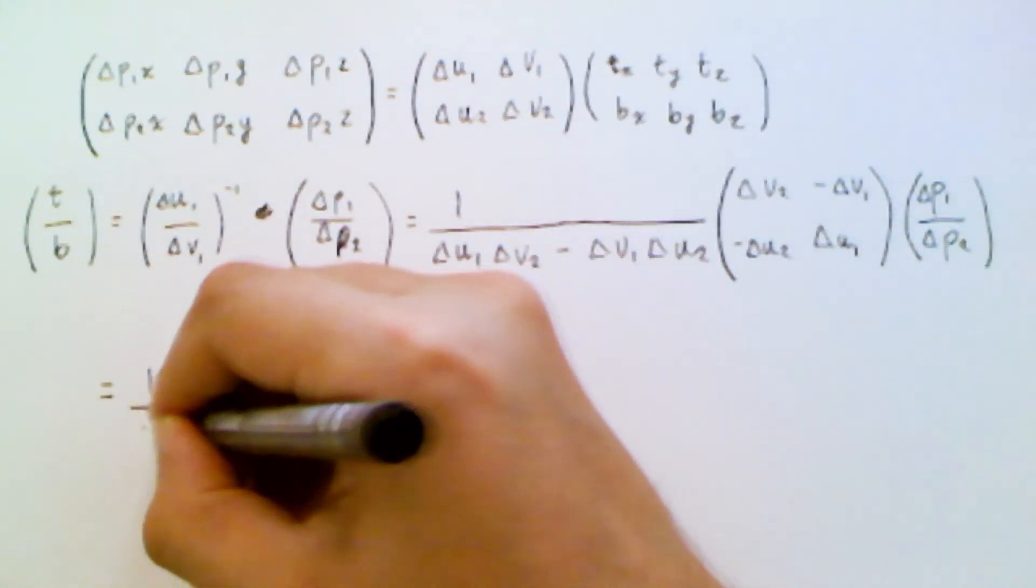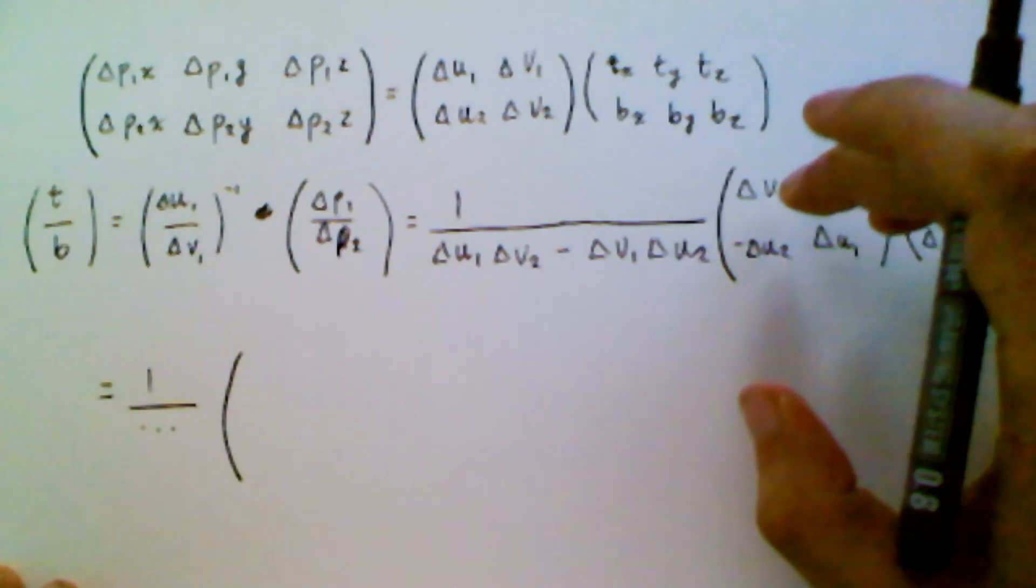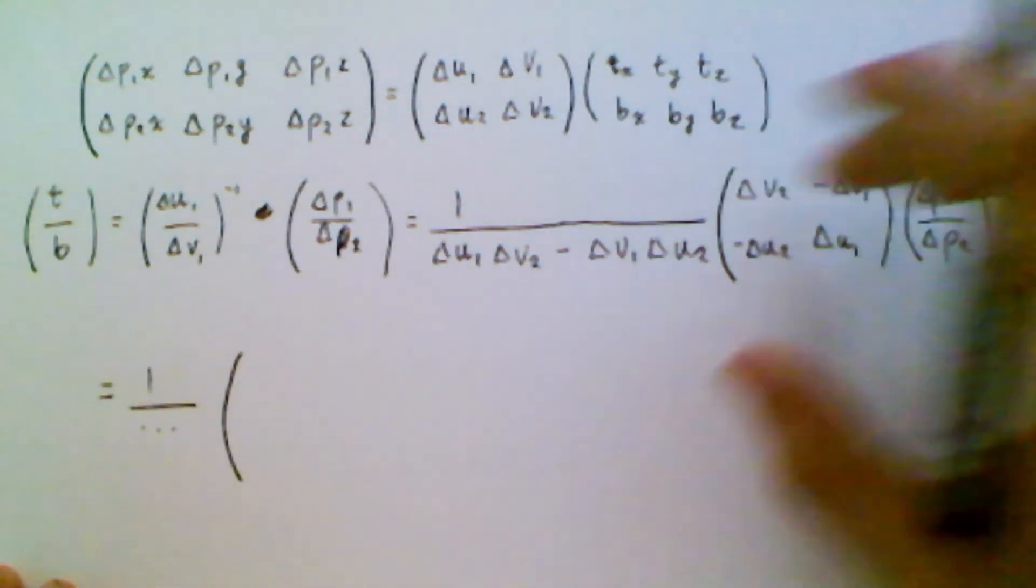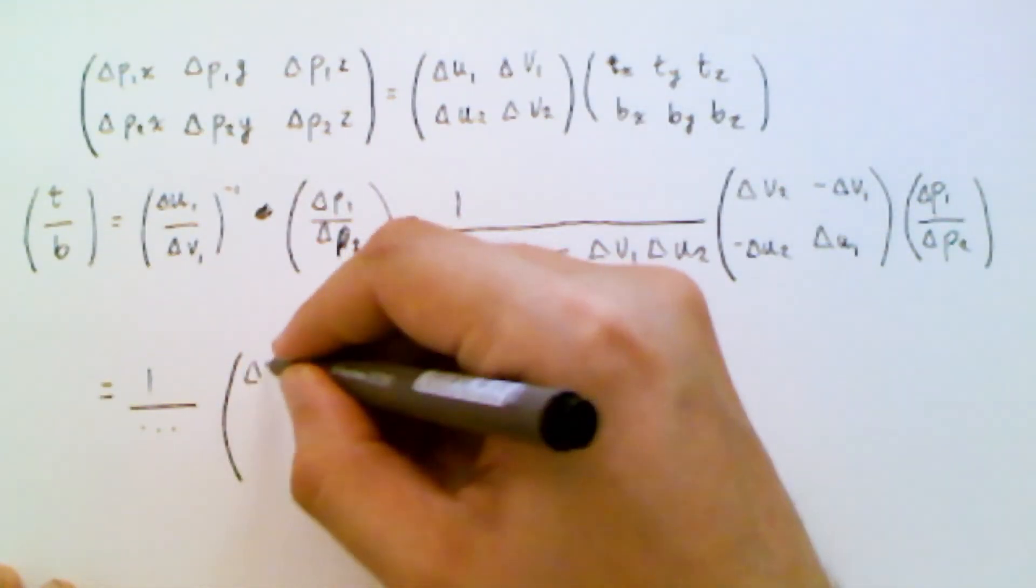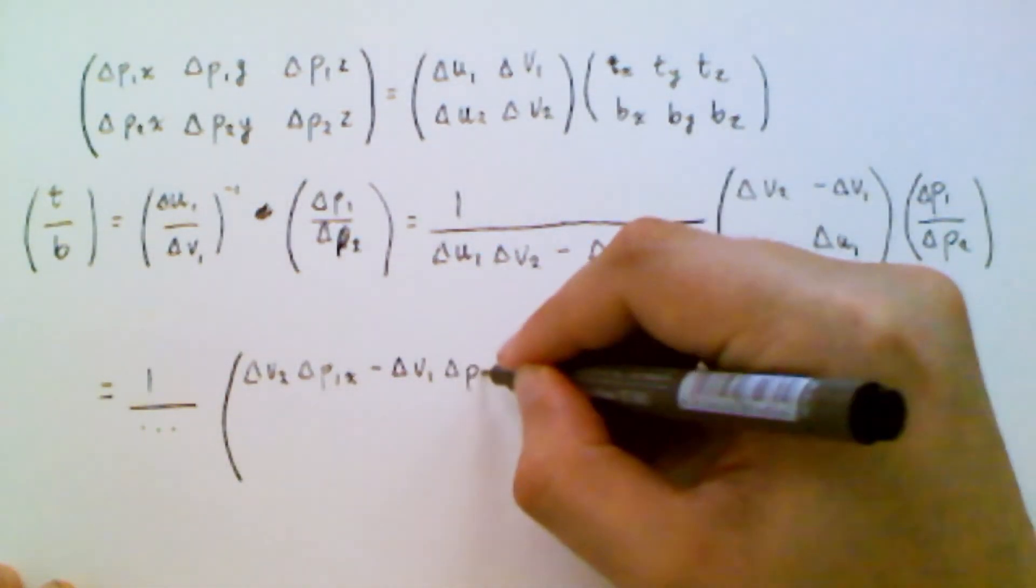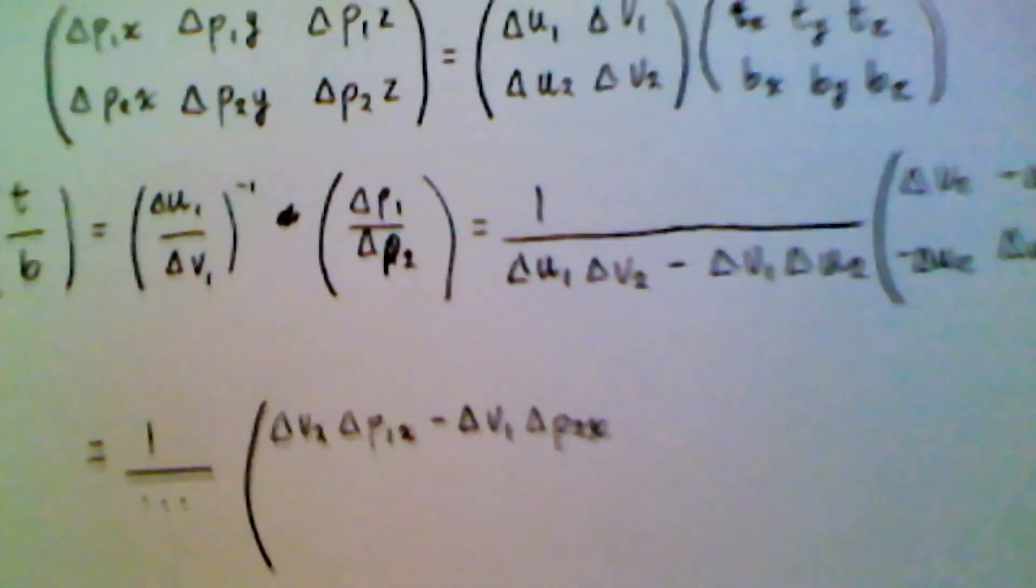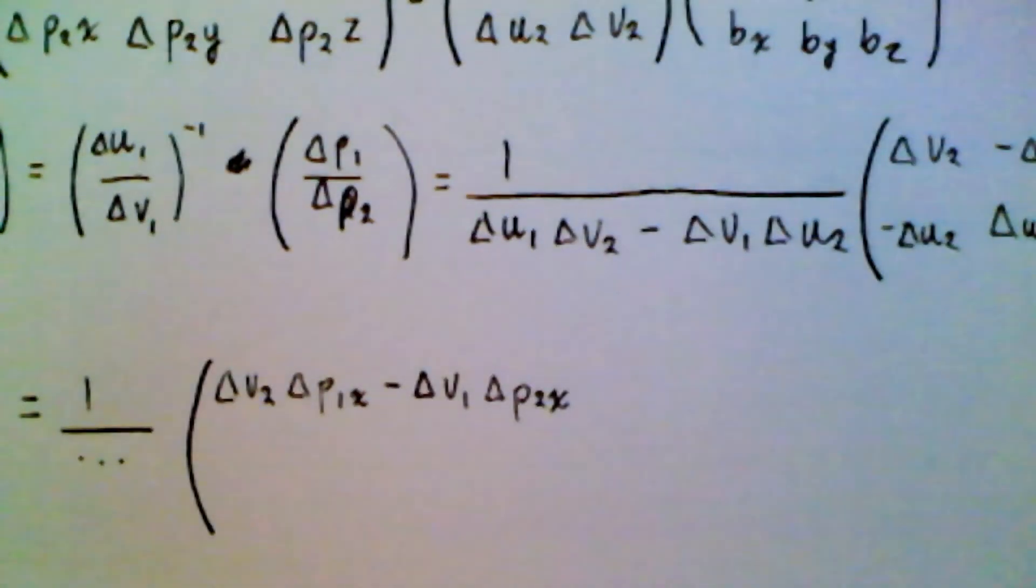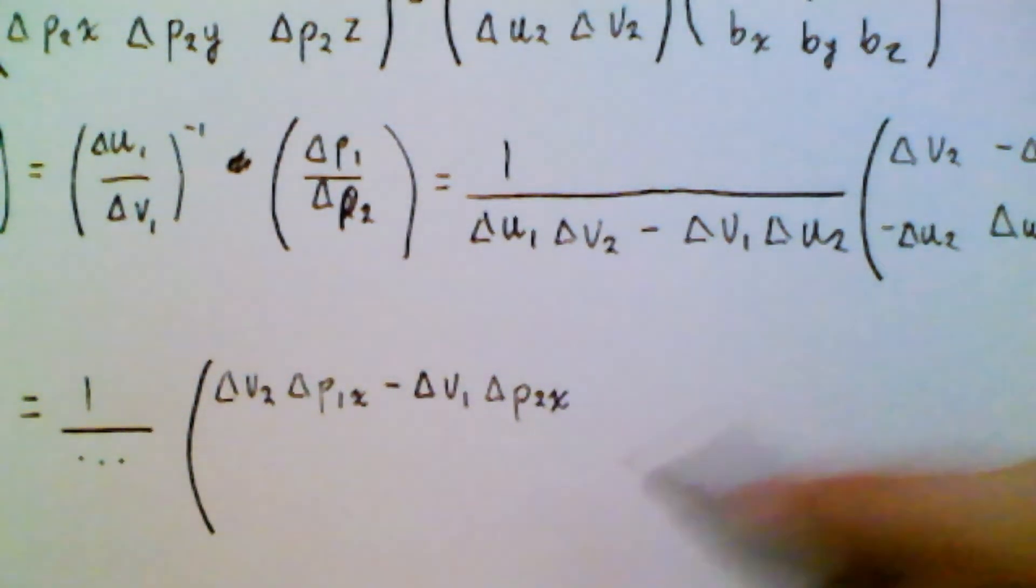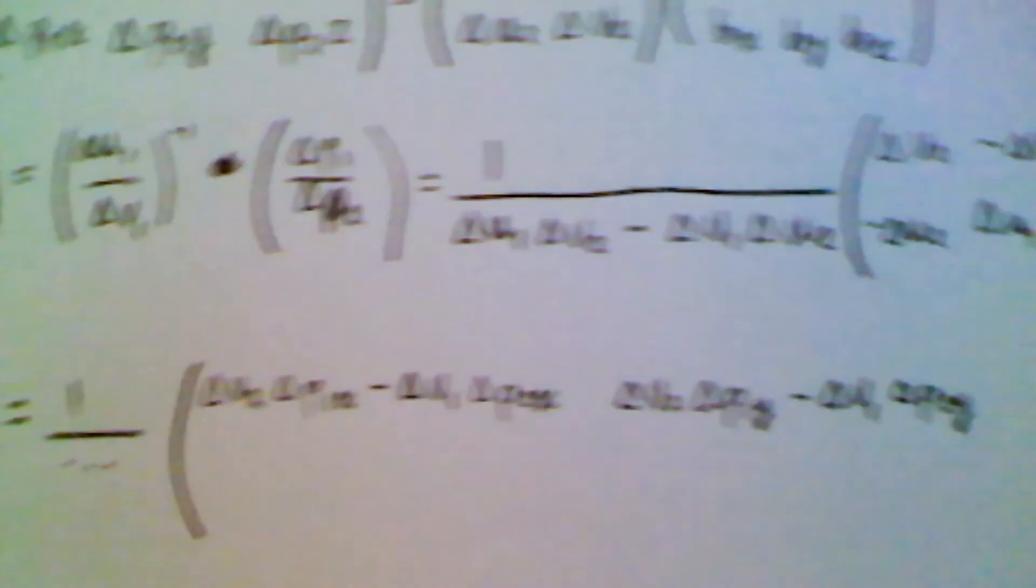It's one over that expression that we had before, times, there we go, like this. So first we'll do the x's, so we have delta v2 minus that. So we have that, a little hard to read. I'll get, I'll get a little closer. Yeah, it's better. And then for the y component of the tangent, we have that.